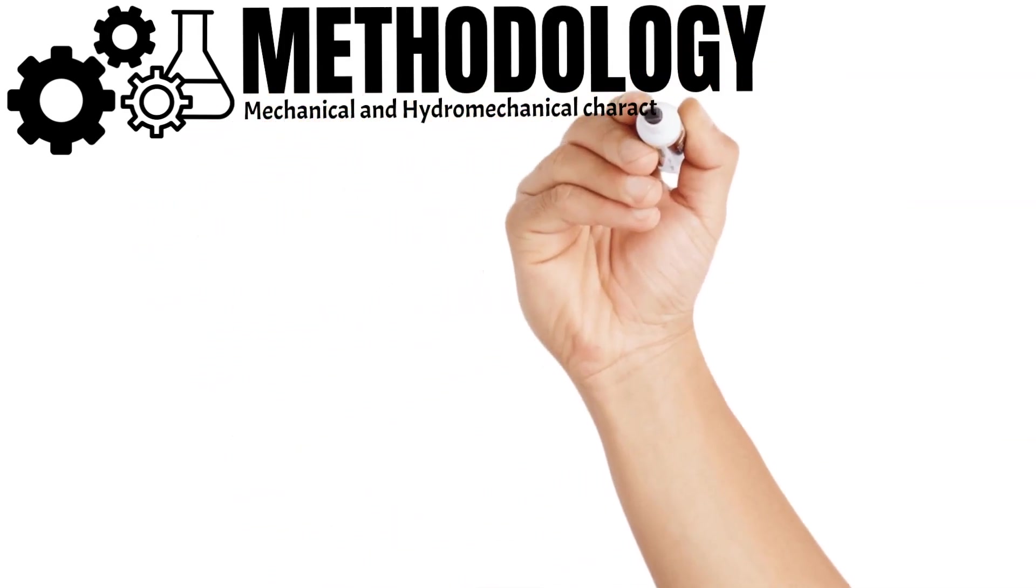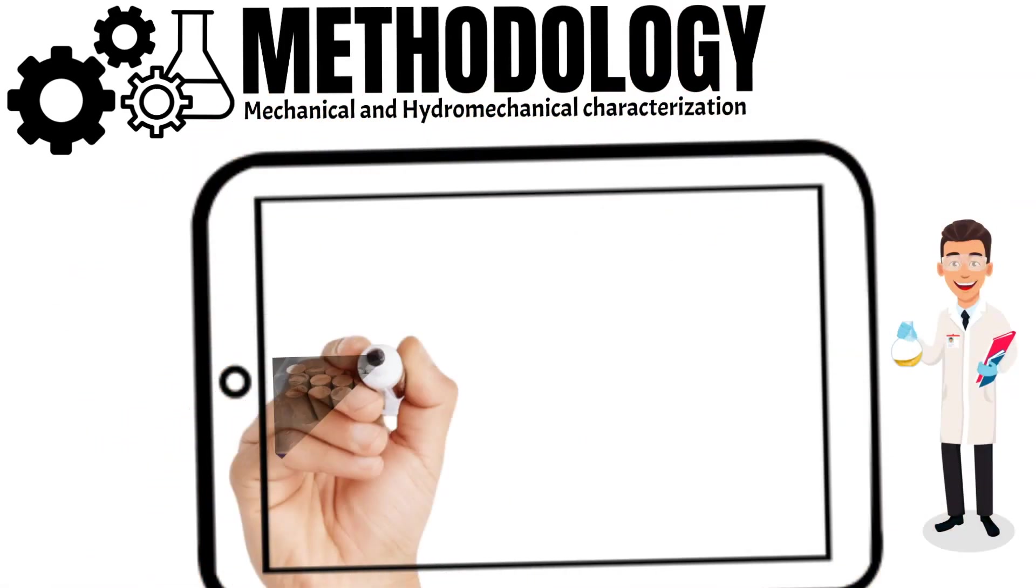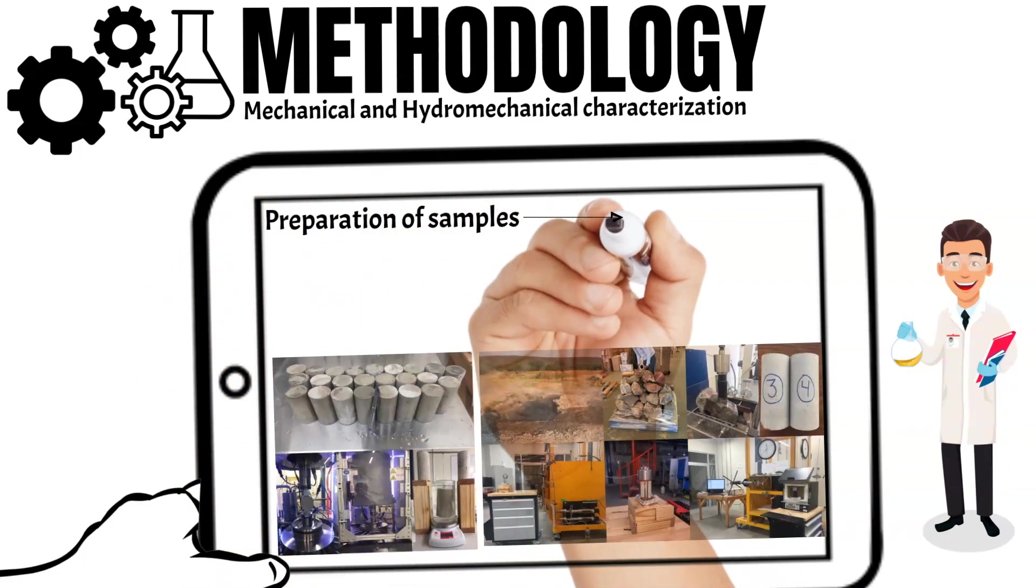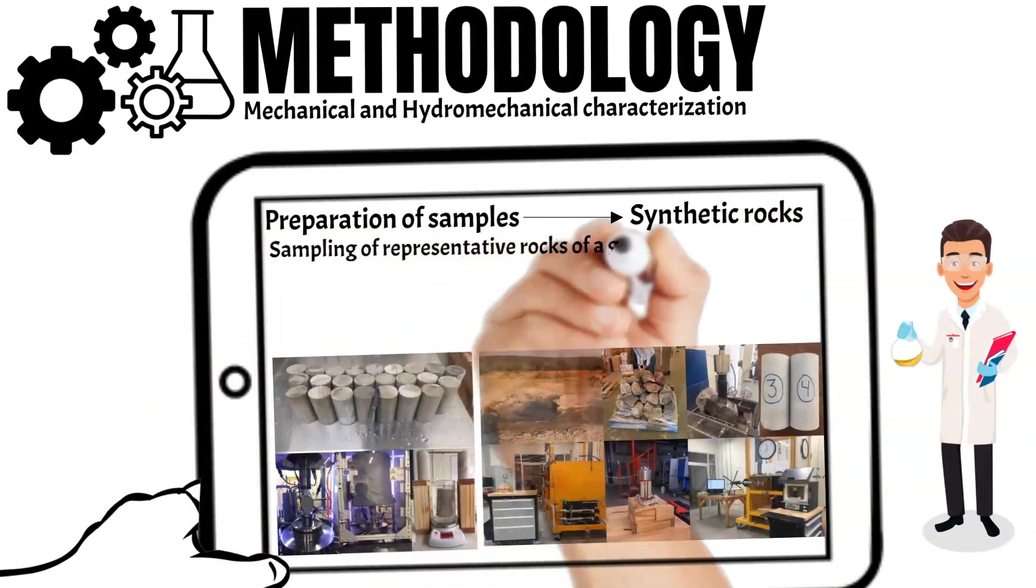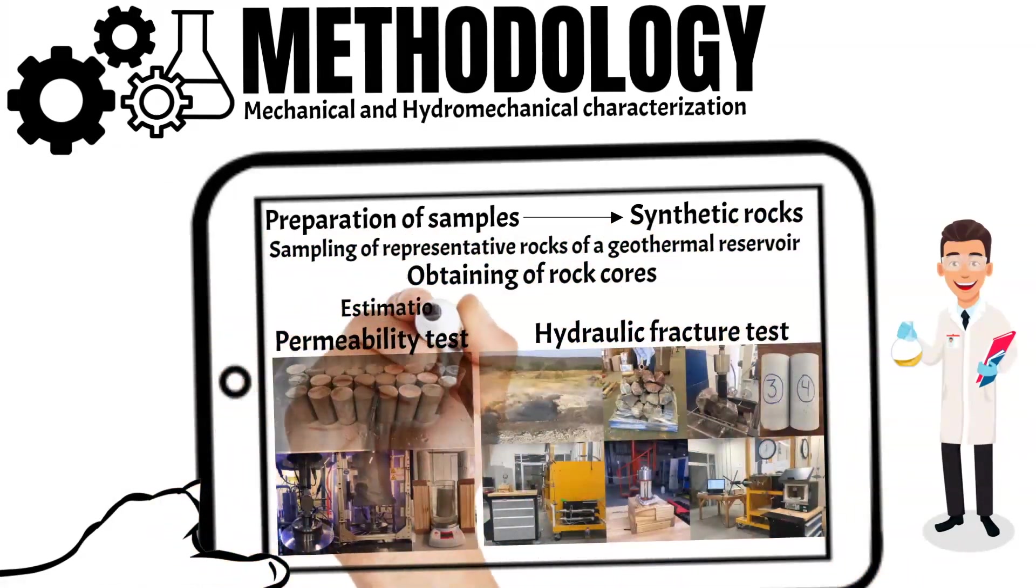Methodology. In summary, this part was in two stages. For example, mechanical and hydromechanical characterization in mortar and rock samples, like permeability and hydraulic fracture tests at 20 and 100 degrees Celsius.